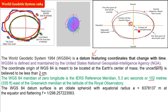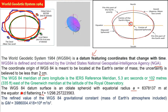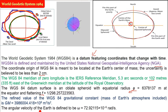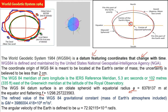WGS 84 uses specific numbers — we need an ellipsoid. It is an oblate spheroid with equatorial radius A as a defined number and inverse flattening as a defined number. The refined value of the WGS 84 gravitational constant GM, including the earth's atmosphere, is a specific defined number. And since the datum's coordinates change with time, the angular velocity of the earth is also defined as a specific number. These are the specific parameters WGS 84 uses.